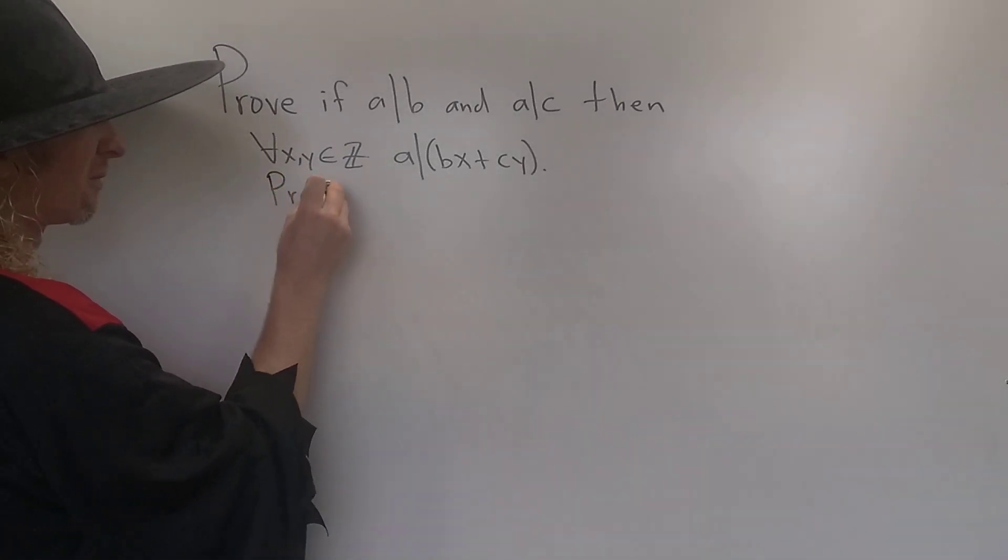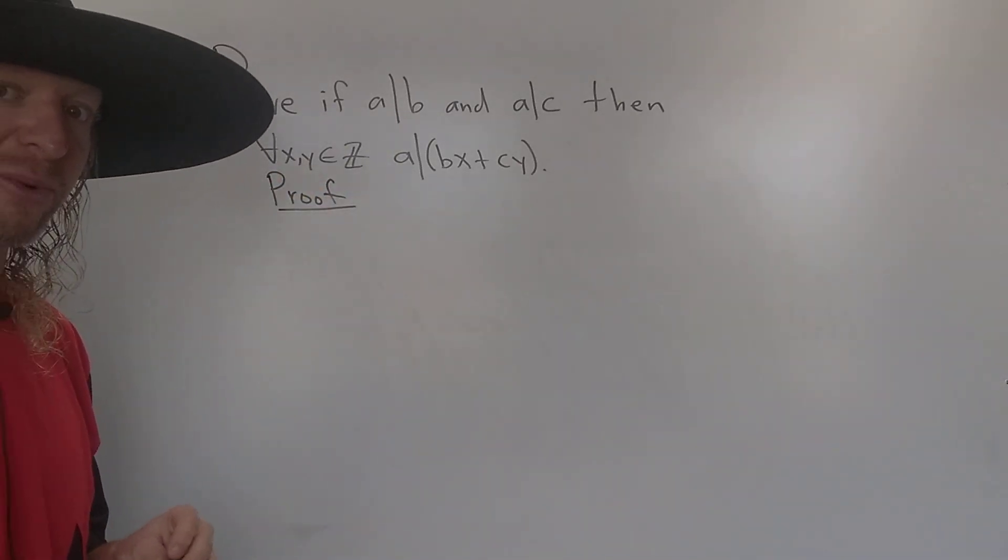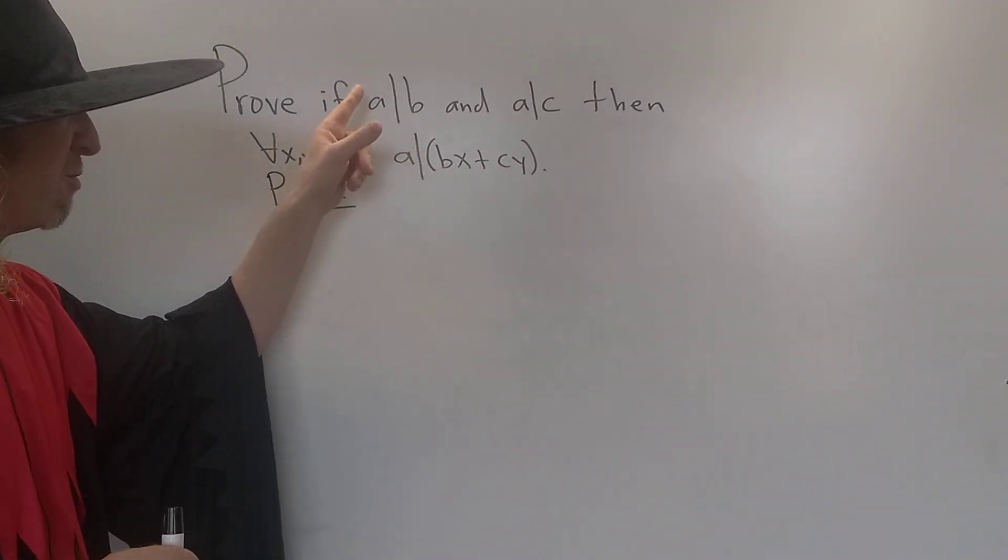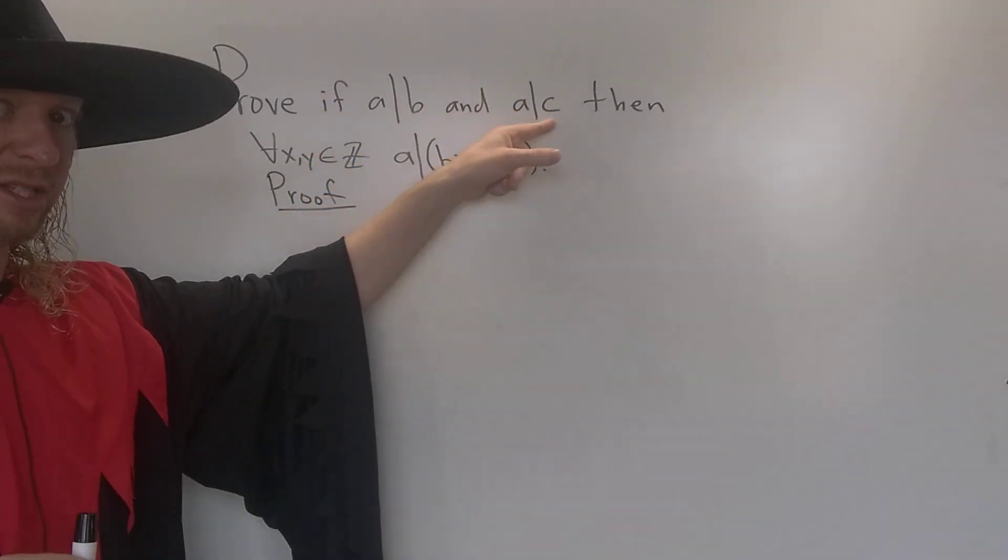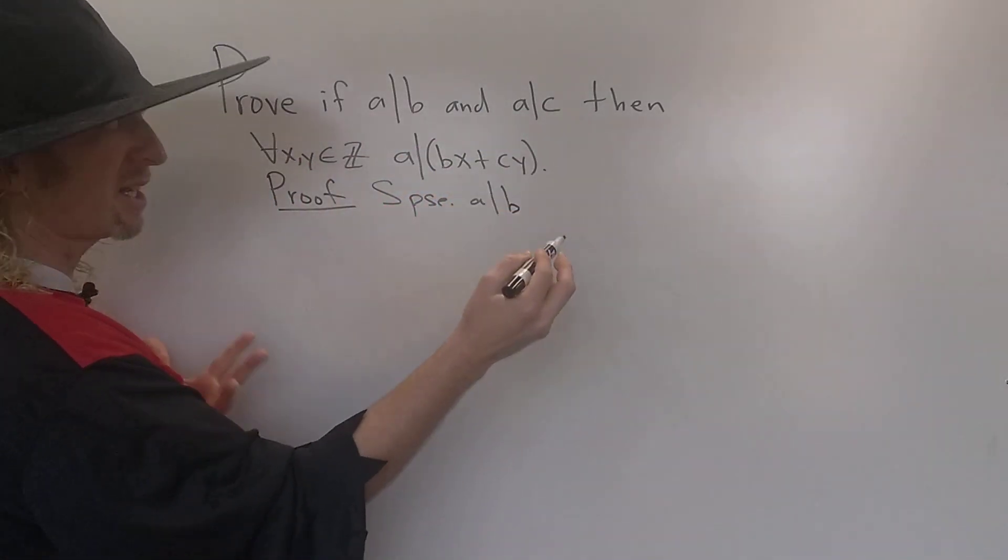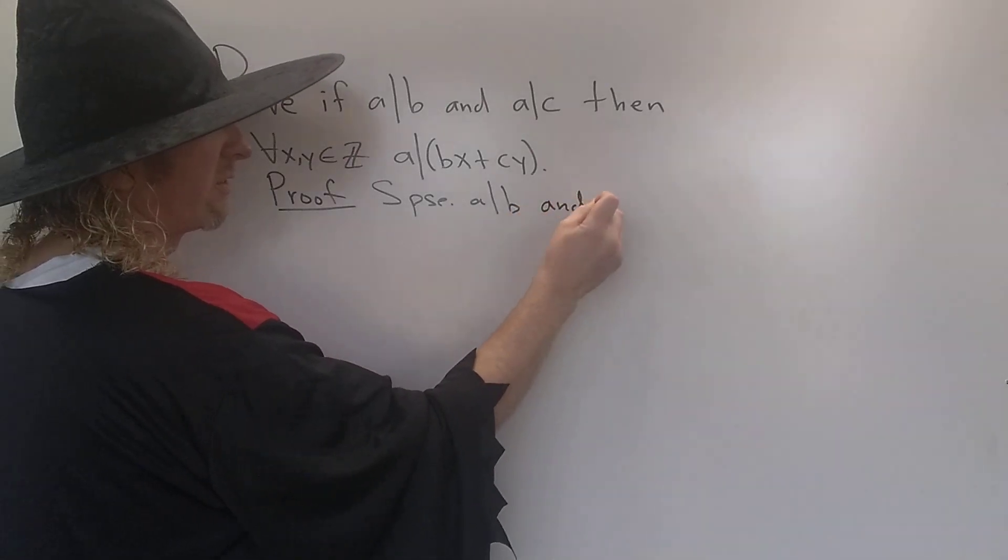Proof. This is an if-then statement, right? So we start by assuming this is true, then we have to show this is true. So we'll start by assuming that a divides b and a divides c. So suppose a divides b and a divides c.